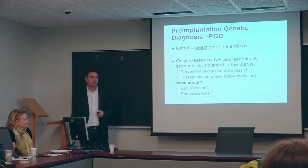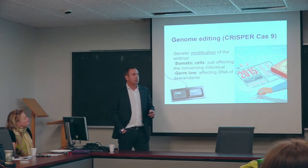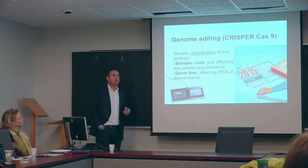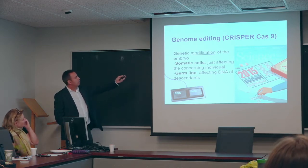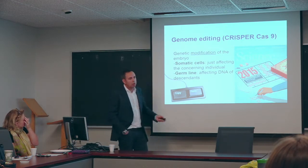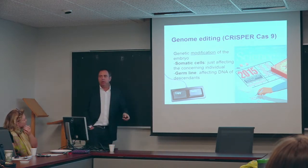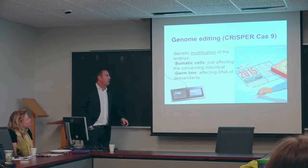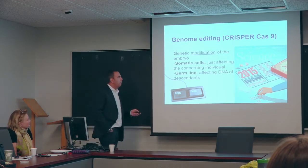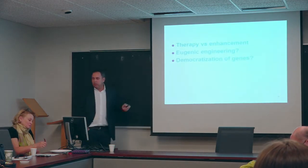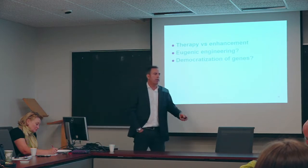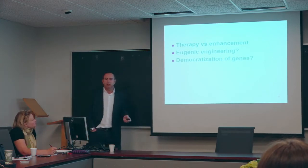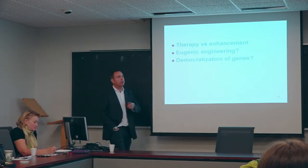This takes us to the distinction between PGD and genome editing, specifically CRISPR-Cas9. By contrast with PGD, in CRISPR-Cas9 we have a genetic modification—not selection—of the embryo. There is no problem when we are talking about somatic cells, just affecting the concerning individual, but this is rather controversial when we are talking about germline, because this is going to affect all descendants. Many questions arise: the initial debate between therapy and enhancement—when is a reproductive technology therapy and when is it an enhancement, and should it be allowed or not? Second, is CRISPR-Cas9 a case of eugenic engineering? And finally, could CRISPR-Cas9 be qualified as a democratization of genes?